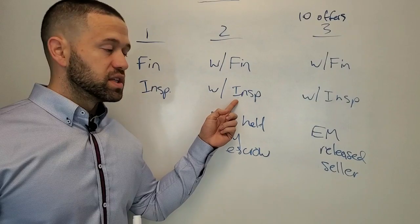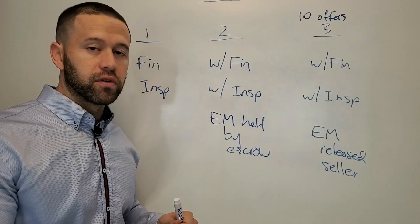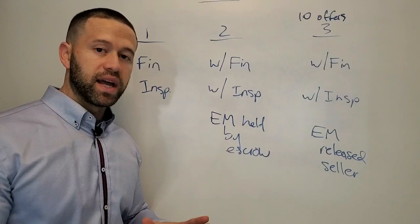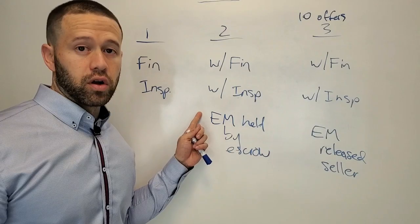Waiving inspection is where you inspect the property before writing your offer. So you write the offer and the offer says the house is as is and there won't be any renegotiations based on the condition of the property. This is normal, where you submit earnest money and it's held by escrow throughout the transaction and then it's applied to your down payment at closing. This is a really strong offer.